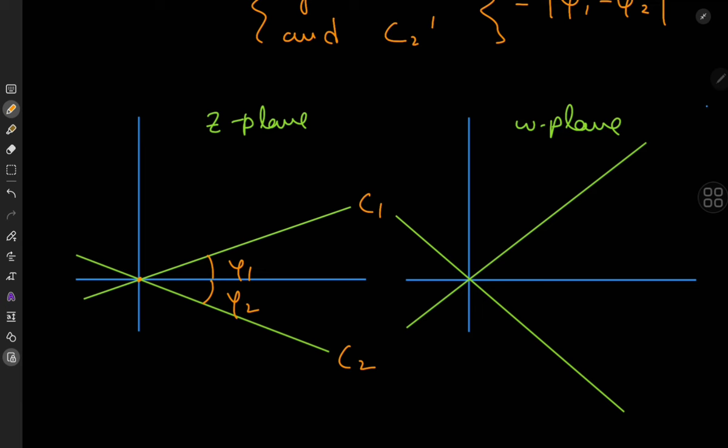Now the argument of any complex number on c1 is phi1 and for c2 let's call it phi2. If I subject these curves to a transformation w equal to z squared then what happens is that the argument of each complex number is doubled.